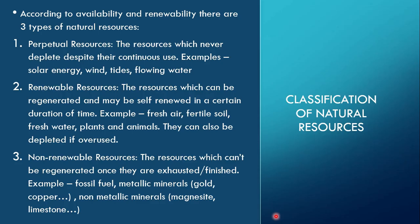Now let's move on to the classification of natural resources. There are different bases for classification. Availability and renewability is one criteria — meaning how much they are available, how long they will be available, and whether they can be renewed or regenerated. According to that, natural resources are classified into three types: perpetual resources, renewable resources, and non-renewable resources.